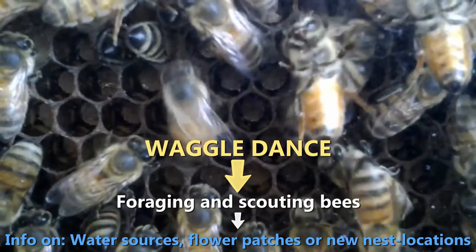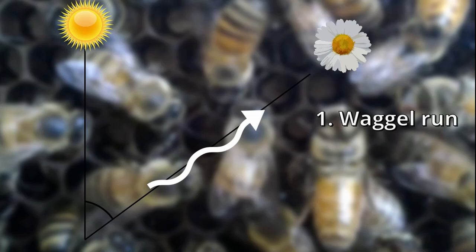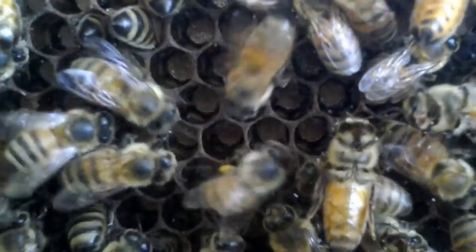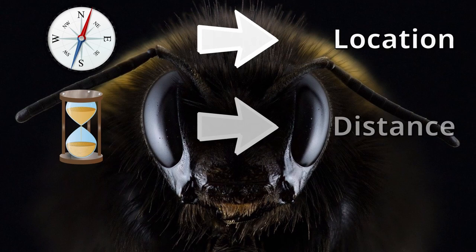They start with a so-called waggle run, which is followed by a right circle back to the starting spot, then another waggle run and a left circle back to the starting spot. That procedure can be repeated up to over 100 times by a single bee. The angle or direction in which the bee moves in relation to the hive shows the direction of the location, and the duration of the waggle circuit reveals the distance to that location. On top of that, it is believed that the number of circuits even shows the quality of the discovered spot.